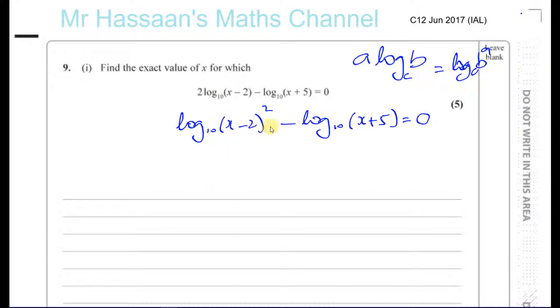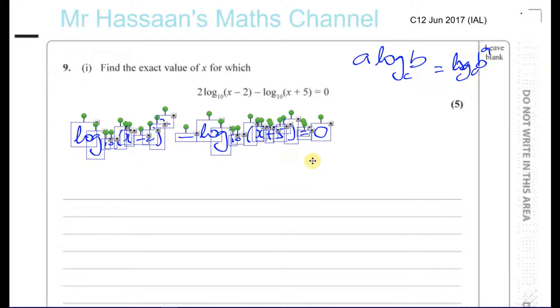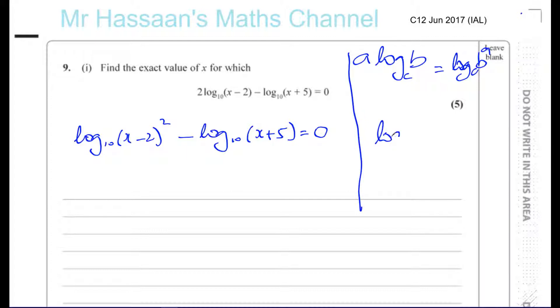Now I can combine these two together using the law of logarithms to do with the subtraction, the subtraction law. Let me just make some space on this side. So I know one of the laws of logarithms is log to the base B of A minus log to the base B of C is going to equal log to the base B of A over C. And if it was a plus, A times C, so the subtraction law causes a division here.